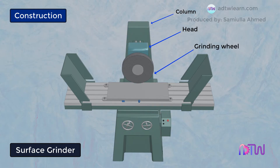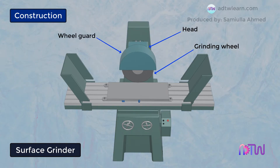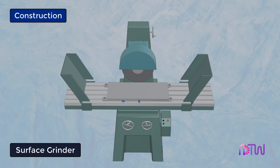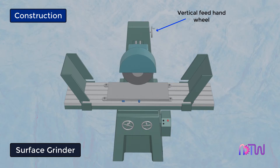A grinding wheel made up of abrasives is mounted on the grinding wheel head, and this wheel does the actual work of material removal. A wheel guard covers the grinding wheel so that no accidental contact happens during the operation. There is a vertical feed hand wheel which gives motion to the grinding wheel head in the vertical direction, allowing the head to move up and down to give depth of cut.